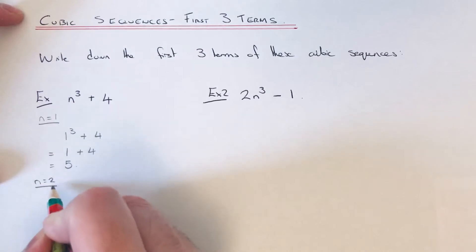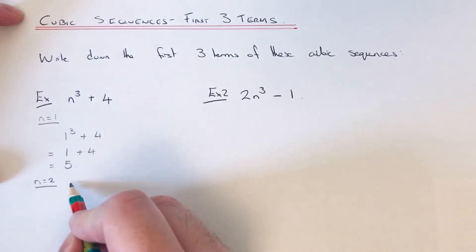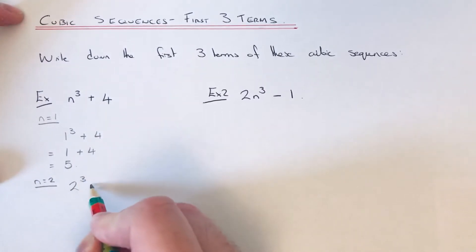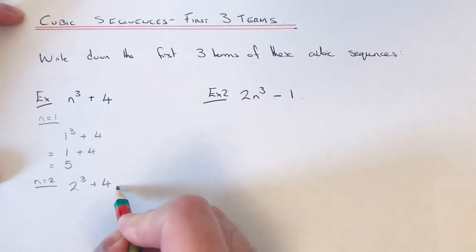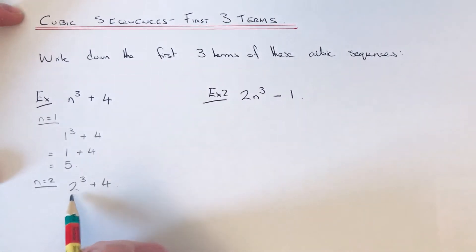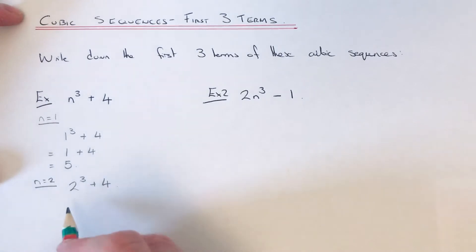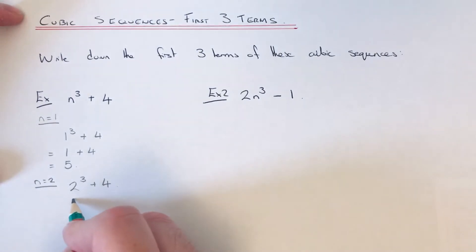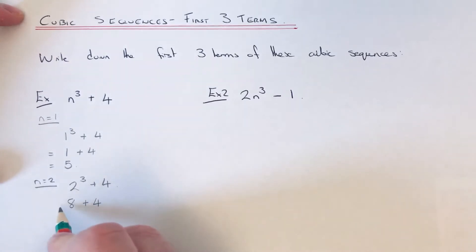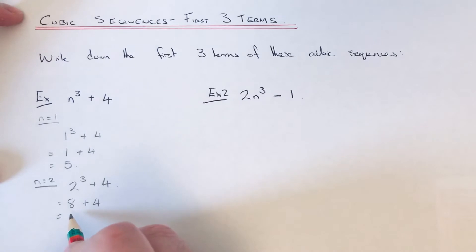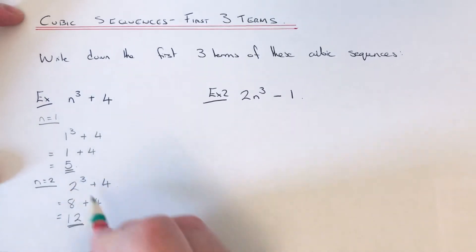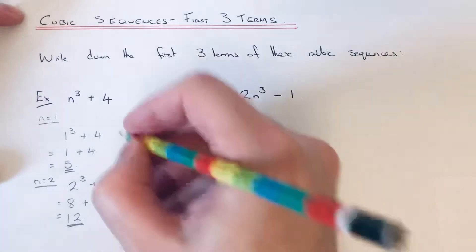For our next term we need to substitute n equals 2, so this time we need to do 2 cubed plus 4. 2 cubed is 2 times 2 times 2, which gives an answer of 8, and we add on 4.